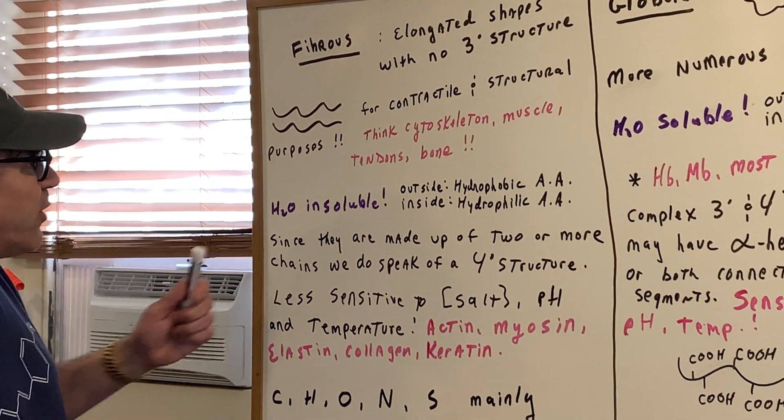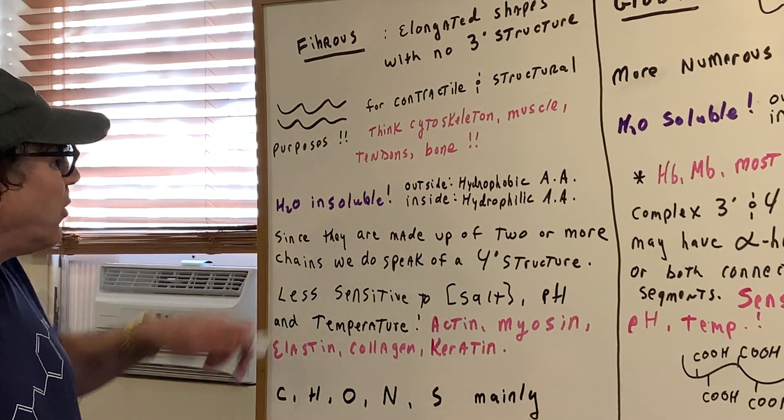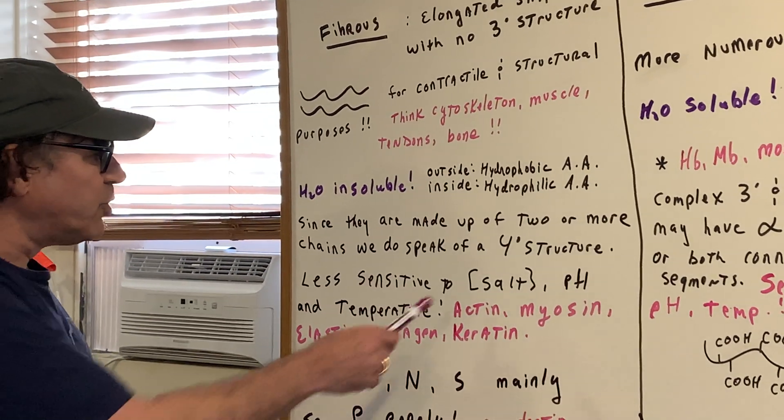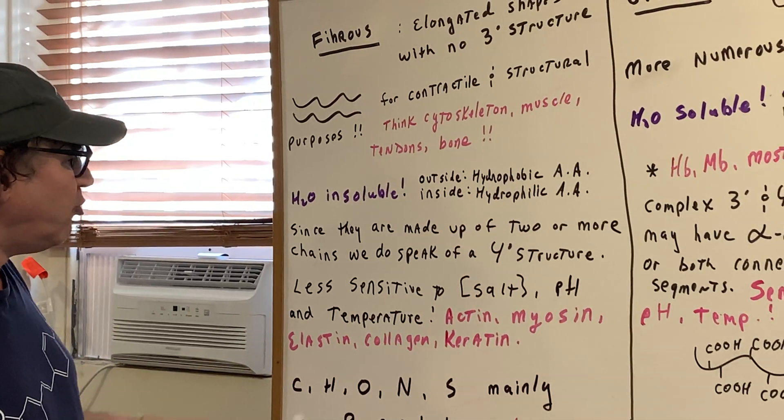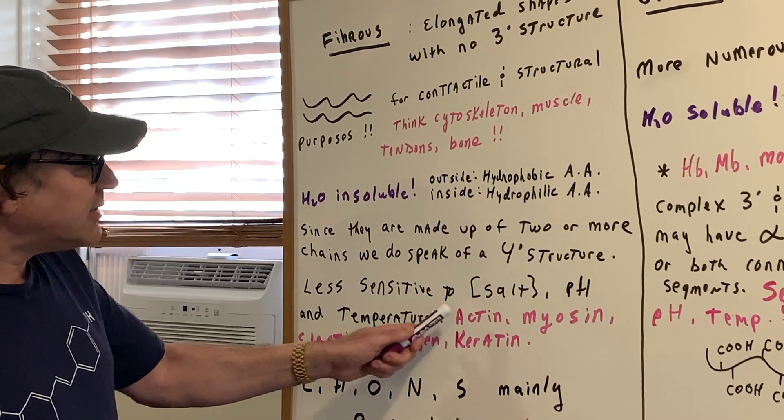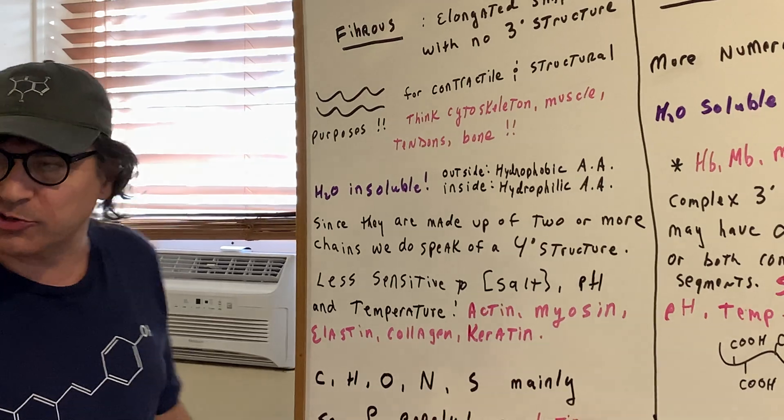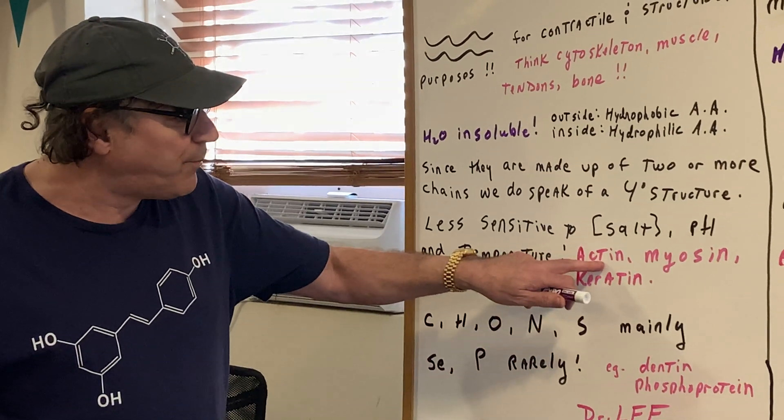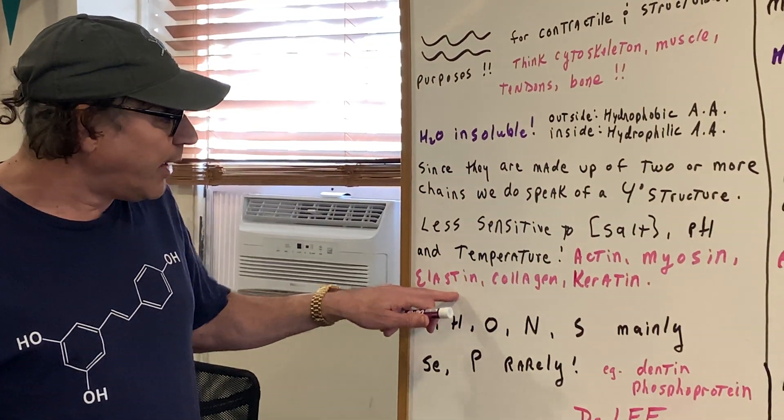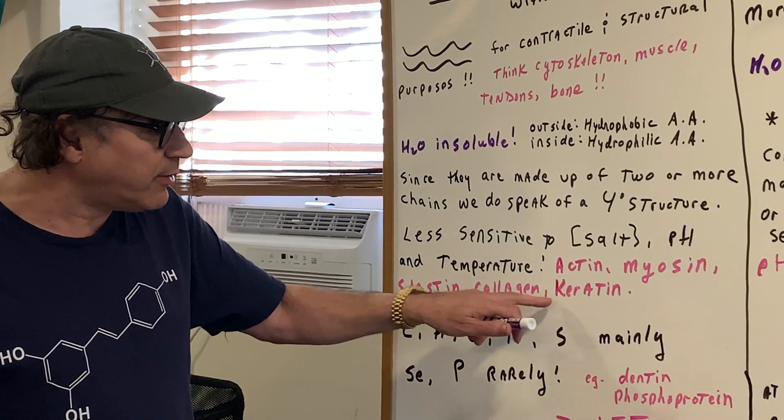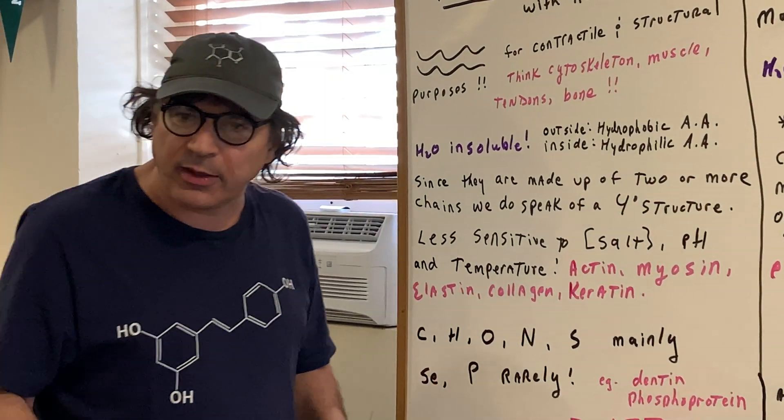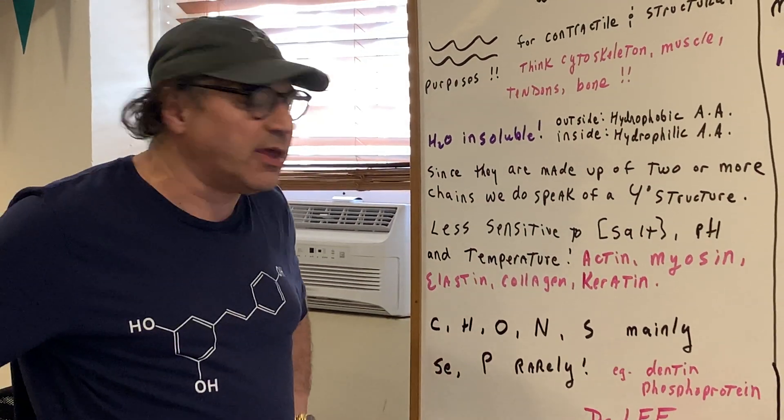Fibrous proteins, because they are insoluble in water, are less sensitive to salt concentration, pH change, and even temperature. Good examples of fibrous proteins, which is a sure bet on the DAT exam, would be actin, myosin, elastin, collagen, keratin. If you remember keratin, we just got done saying it helps make the skin waterproof.